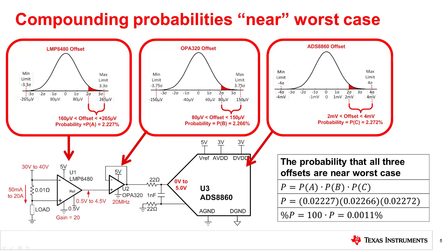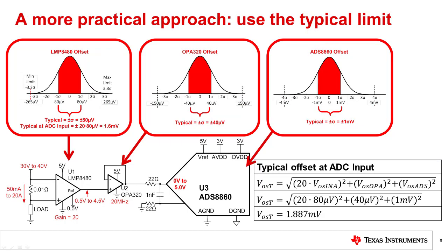In the next slide, we will look at an approach that gives a better statistical understanding of the errors. This slide shows the distributions for all three devices in the signal chain. Rather than adding the maximum values, we will add the three distributions. The standard deviation of uncorrelated Gaussian distributions can be combined as the square root sum of the squares. In this example, all the distributions are referred to the input of the data converter, so the offset from U1 is multiplied by the gain of 20 we noted earlier. The standard deviation for the total combined offset distribution is plus or minus 1.887 millivolts. Let's take a closer look at the combined distribution.